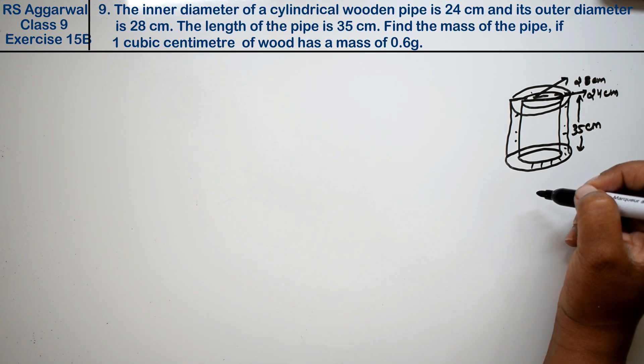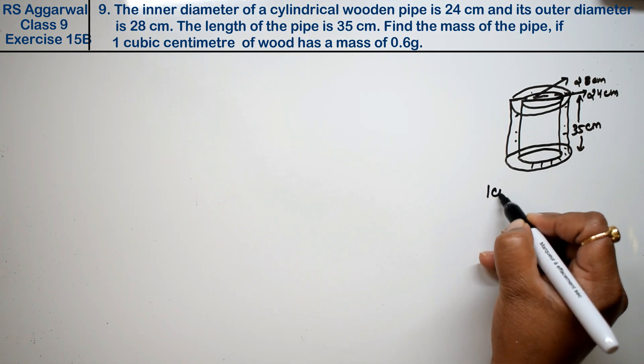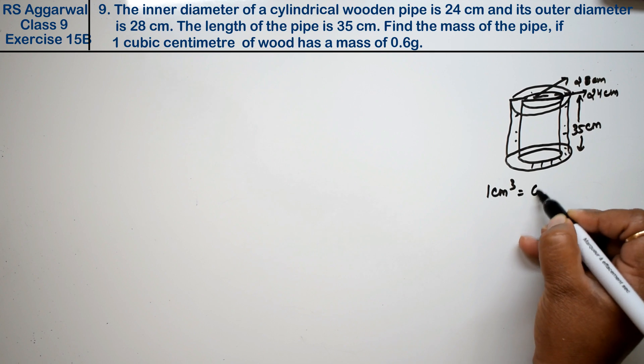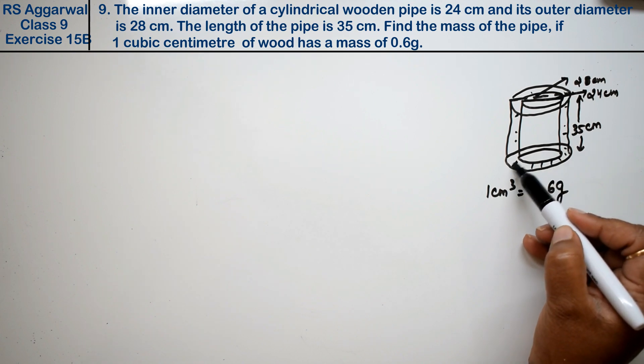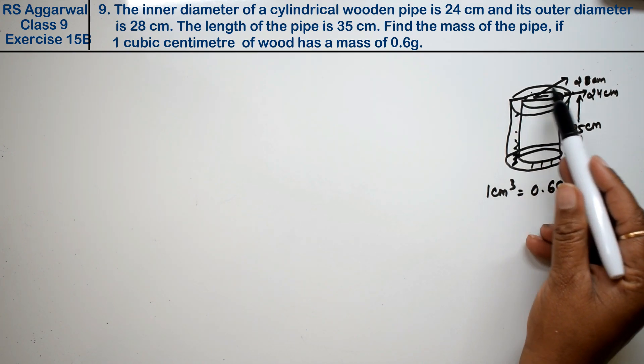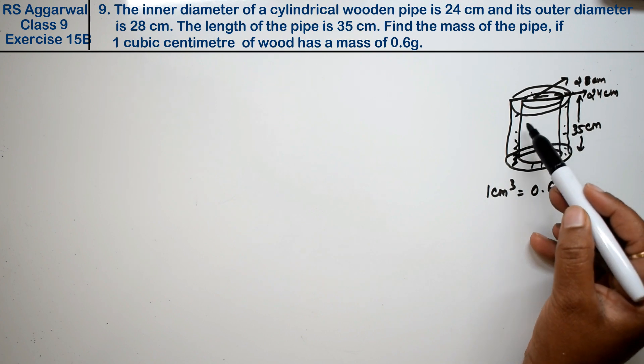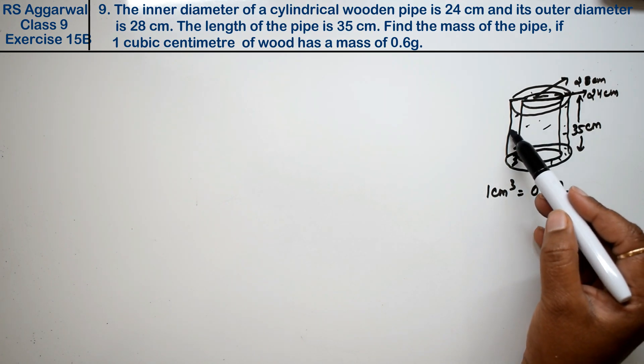They have given us that 1 cm cube is equivalent to 0.6 grams, right friends. So how will we find this? To find this, we will subtract the inner volume from the outer volume. This inner part will be subtracted out.